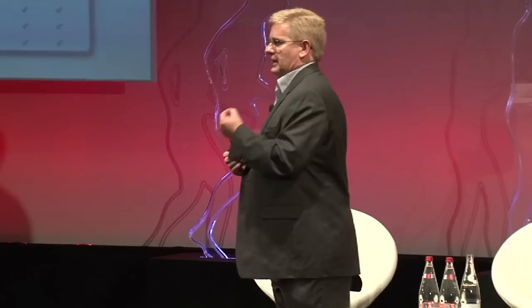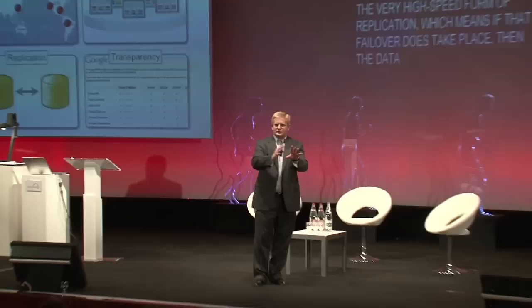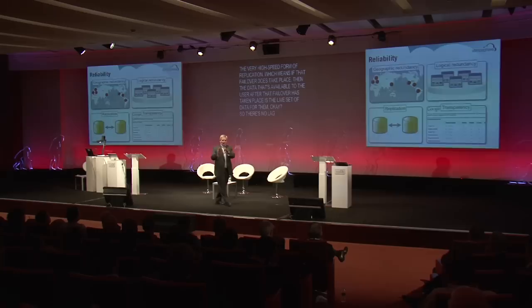One of the fundamental aspects of building the cloud, especially with the number of servers that we have in our data centers, is that you'll have failures — servers will fail. Fundamentally, at the hardware and software level, we have acknowledged that fact and built a system that will recognize failures and heal. What that means more practically is that we have redundant copies of applications, redundant copies of data, so that if a failure does occur, there is a natural failing over — potentially within the same data center, potentially within a different data center — in order to keep the service maintained for the end user. And that depends heavily upon a very high-speed form of replication, which means if that failover does take place, the data that's available to the user after the failover is the live set of data for them, with no lag.